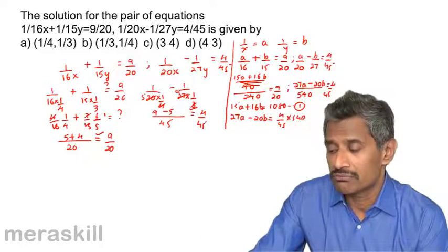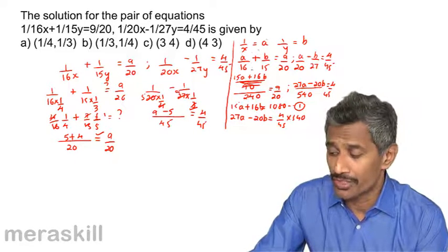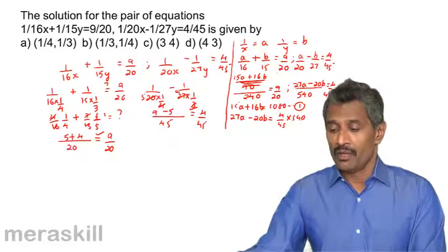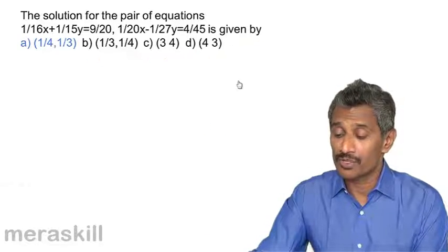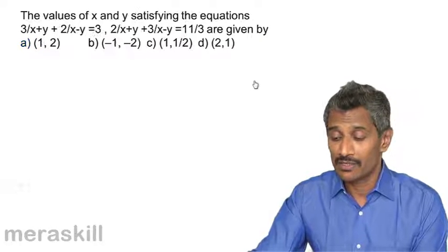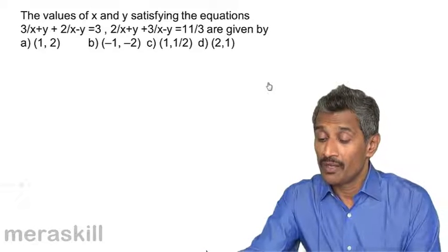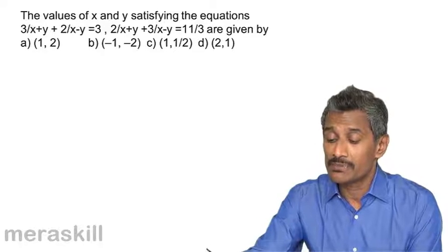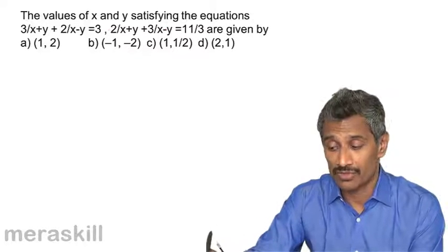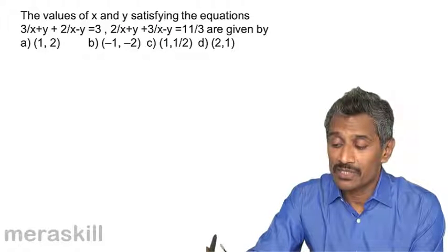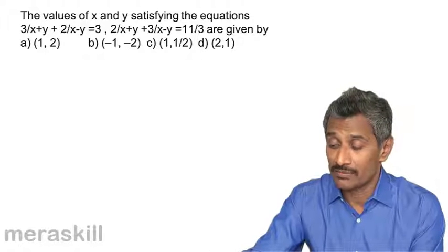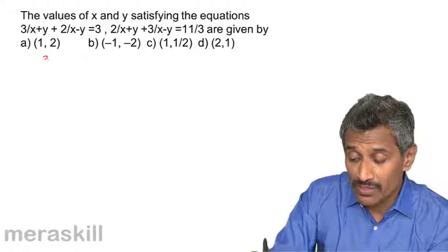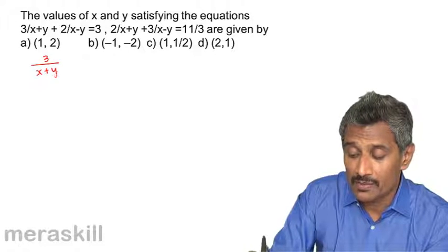In other formats or situations you may need to solve algebraically, but substitution is efficient here. Next we have: 3 upon x plus y plus 2 upon x minus y equals 3, and 2 upon x plus y plus 3 upon x minus y equals 11 by 3. Notice both variables appear in denominators.